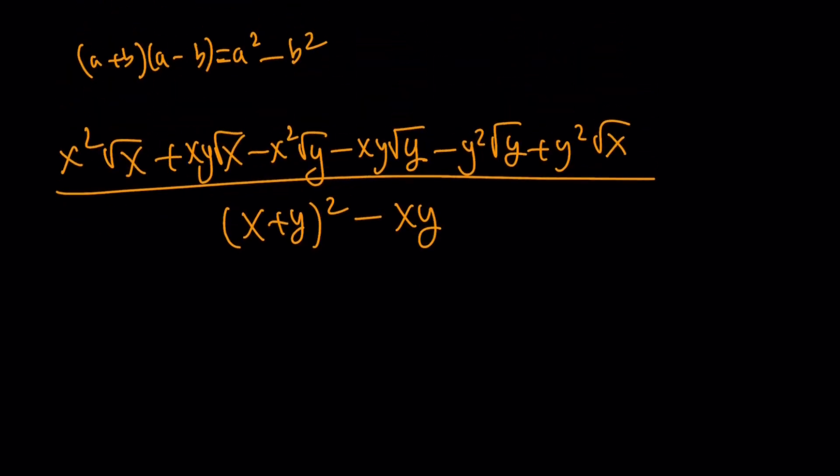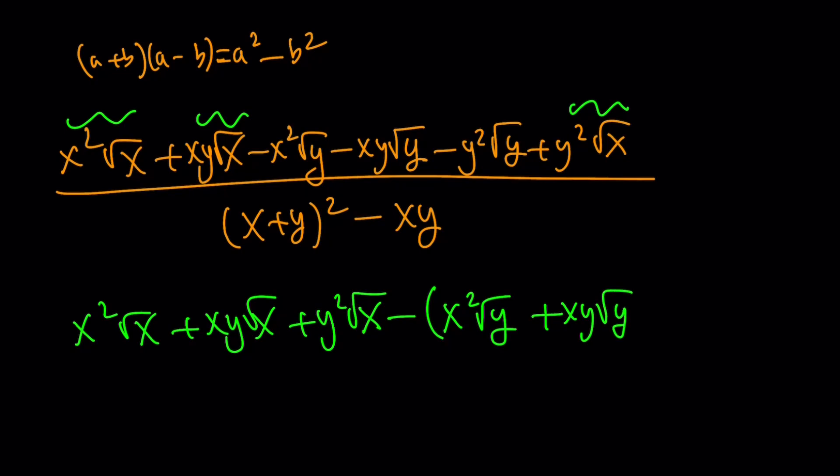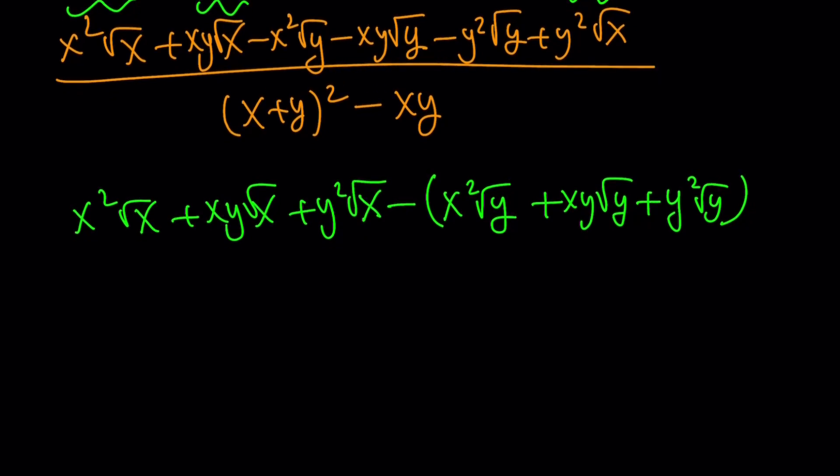This can be simplified. The top can be grouped based on their sign. I'm going to take x squared root x plus xy root x plus y squared root x together. Notice they all have root x in them. Then minus these guys: x squared root y plus xy root y plus y squared root y, because I took the minus sign outside.